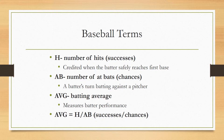Next is batting average, which we'll denote as AVG. This measures overall batter performance and is computed by taking the number of hits, H, and dividing by the number of at-bats, AB — essentially the number of successes over the number of chances. Now we can look at some numbers.